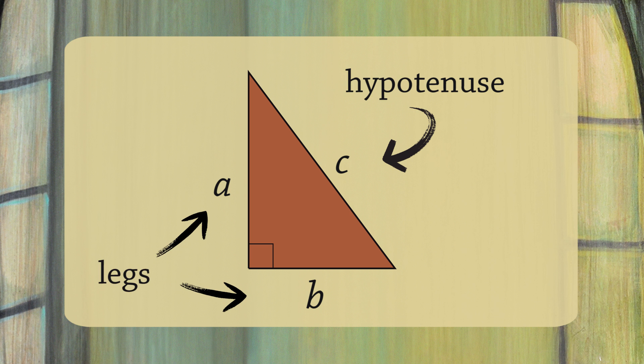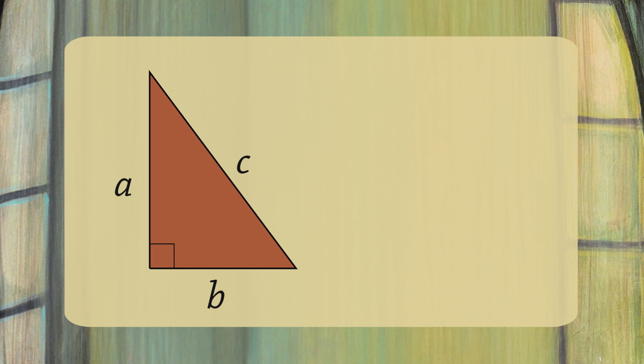Now that we've correctly labeled the three sides, we're ready for the Pythagorean theorem. It says that A squared plus B squared equals C squared, and the converse is also true. If A squared plus B squared equals C squared, then it must be a right triangle.